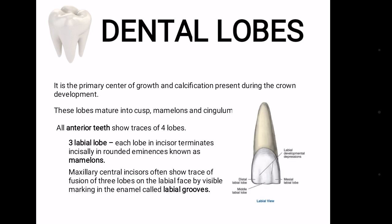The maxillary central incisor often shows traces of fusion of 3 lobes on the labial face by visible markings in the enamel called labial grooves. The 1 lingual lobe is represented by the cingulum.